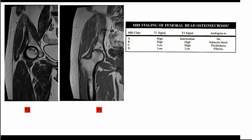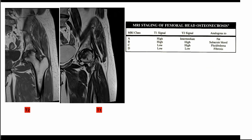For MRI, there is the Mitchell's classification. MRI is the most sensitive imaging modality for detecting osteonecrosis, especially at early stages, and is more sensitive than nuclear bone scans. Mitchell's classification divides findings into four classes — A, B, C, and D — based on T1 and T2 signal. Class A is analogous to fat: high on T1, intermediate on T2. Class B represents subacute blood: hyperintense on both T1 and T2. Class C represents fluid or edema: hyperintense on T2, low on T1. Class D represents fibrosis: low signal intensity on both T1 and T2.